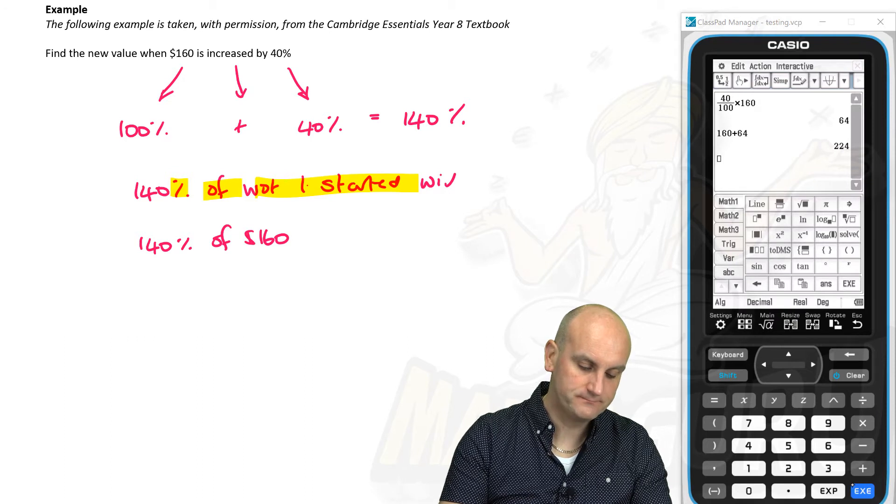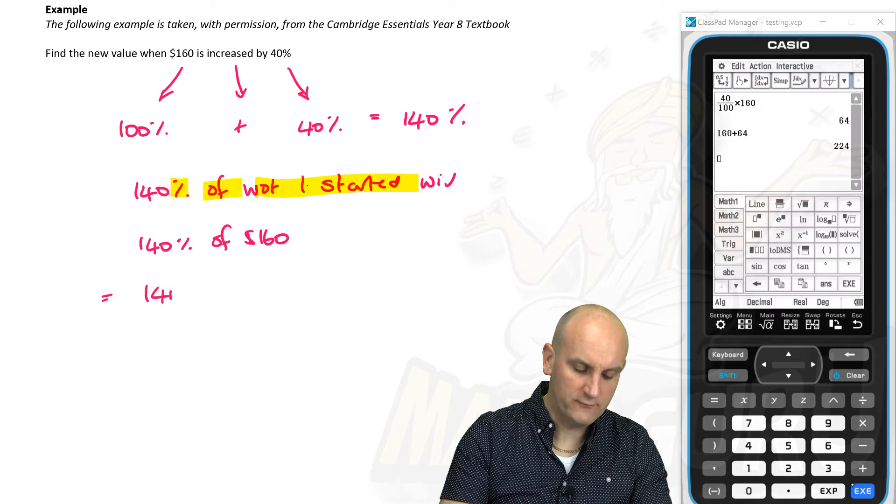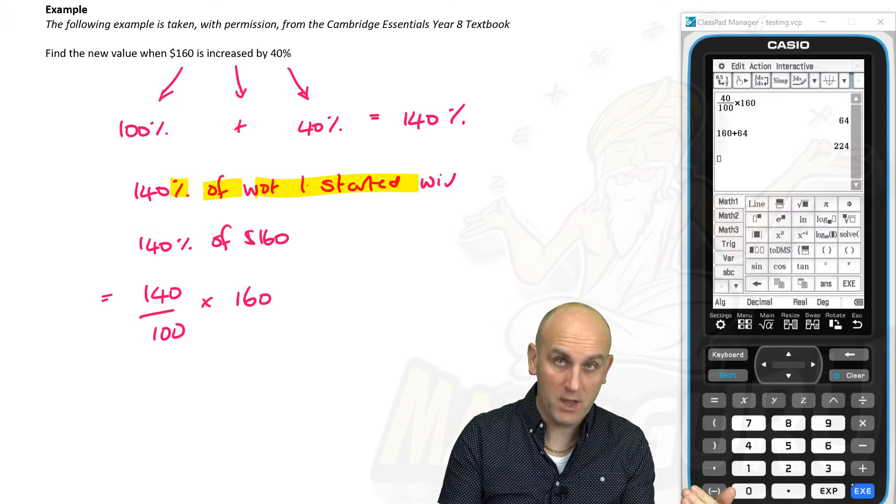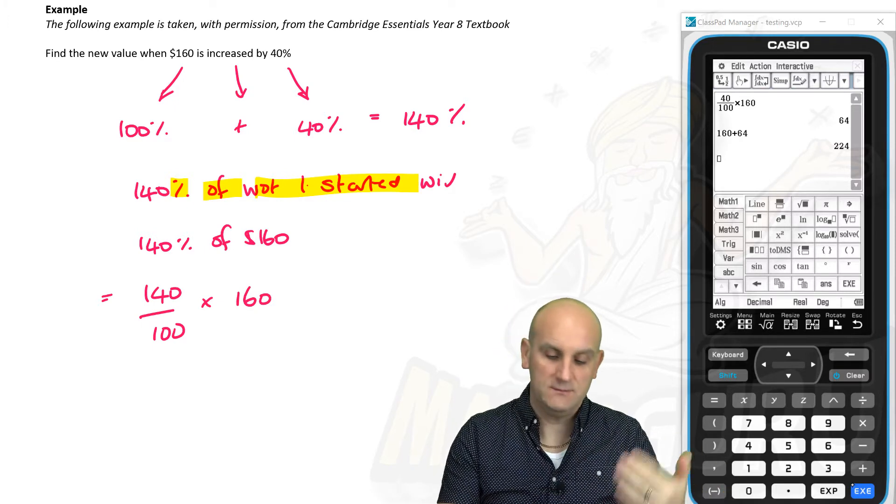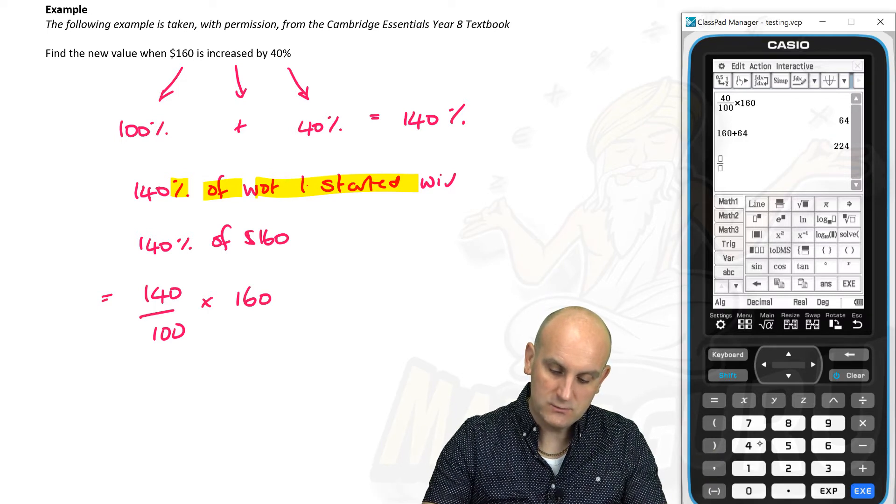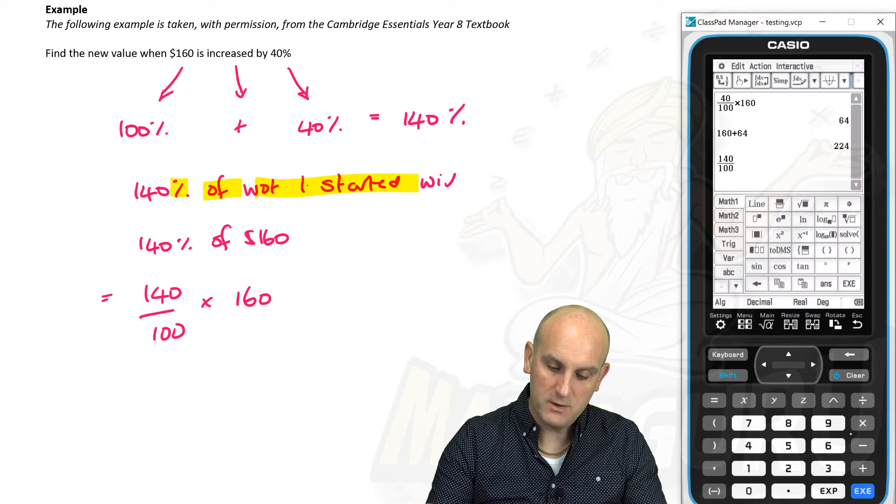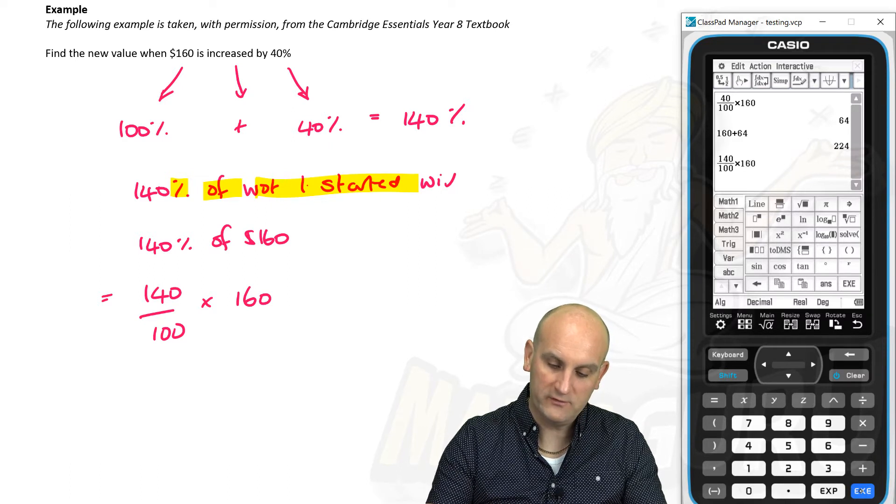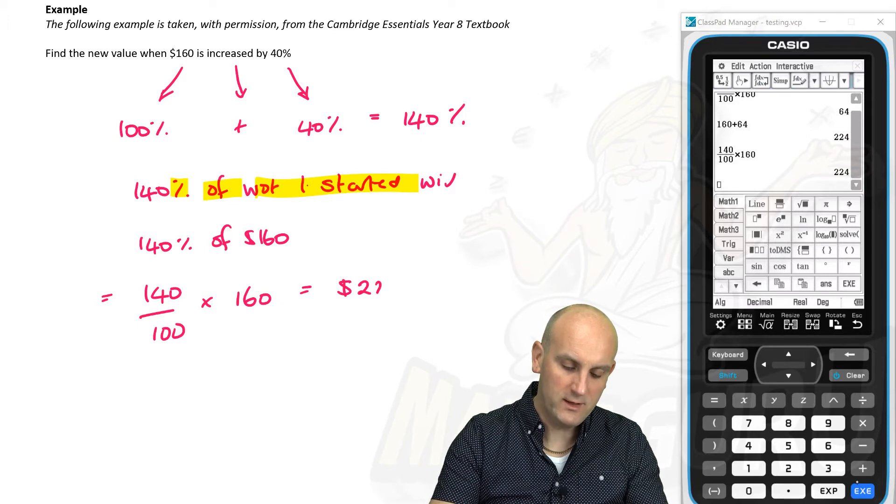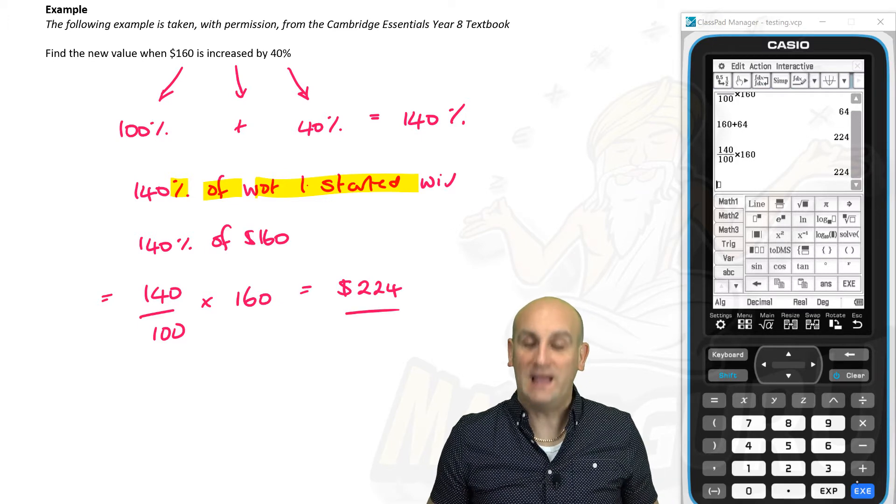So I can rewrite this now as 140% of $160. Should put the dollar sign in, really. Well, that's 140 divided by 100 times 160. Because the percentage sign is divided by 100. Of is times. Can I put this into my calculator? I should go. So there we go. So 140. We're going to divide that by 100. We're going to multiply that by 160. And out comes, hold on a moment. Hold the phone. $224. Absolutely.